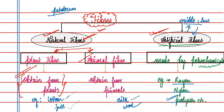Today we have natural fibers from cotton, jute, silk, and wool, and we also have fibers from petrochemicals. We will study petrochemical-based fibers in class 8.